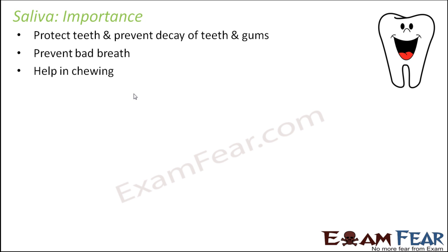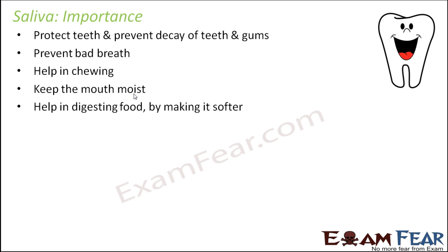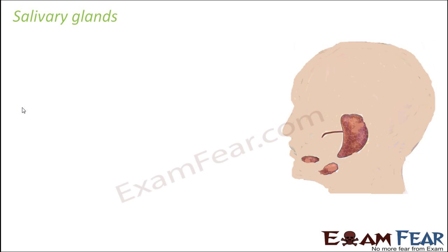Saliva helps in chewing because the watery substance makes food softer, so your teeth don't need to exert a lot of pressure to break it down. It keeps the mouth moist, which feels comfortable. It helps in digesting food by making it soft for the teeth to grind, while mucus makes the food slimy and slippery to help it move inside the body. The enzymes break down carbohydrates into simpler forms, so saliva plays multiple roles in the process of digestion.